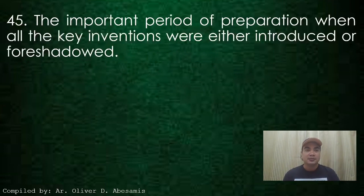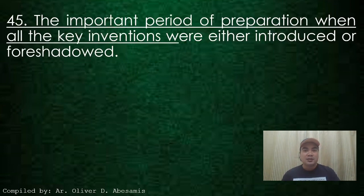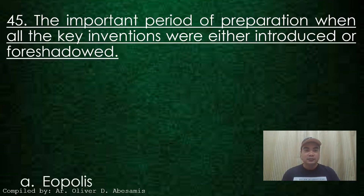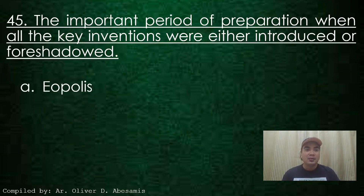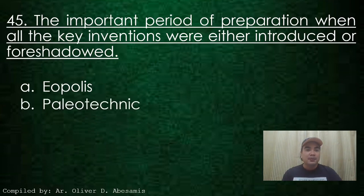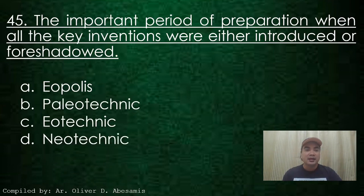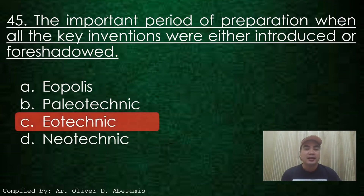Number 45. The important period of preparation when all the key inventions were either introduced or foreshadowed. A. Aeopolis, B. Paleo-technic, C. Aeo-technic, D. Neo-technic. Answer: C. Aeo-technic.